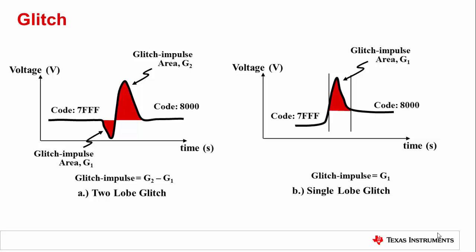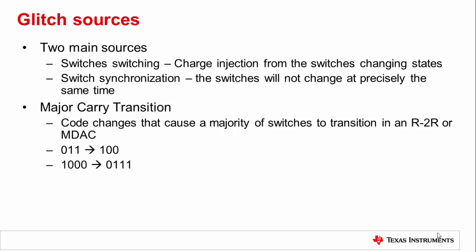The DAC R2R architecture produces the largest glitch in terms of amplitude and duration. There are two primary sources of glitch, both relating to the switches used inside the DAC. First, when the switches transition, the charge injection associated with the switches themselves will contribute a glitch at the output. Second, the switches will not switch at exactly the same time, which will lead to larger glitch impulses. Glitch impulse area is heavily dependent on the DAC architecture.